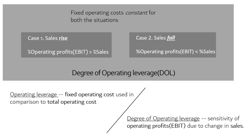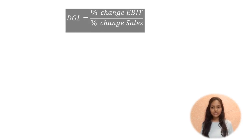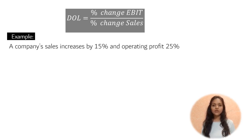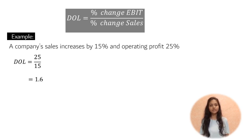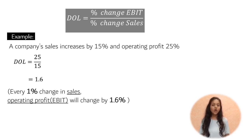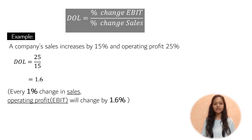Moving on to an example. The formula to calculate degree of operating leverage is: percentage change in EBIT divided by percentage change in sales. For example, if a company's sales increased by 15% and operating profit increased by 25%, the degree of operating leverage comes out to 1.6. The interpretation is that for every 1% change in sales, operating profit will change by 1.6%. There is one more way to calculate this using an alternative formula.